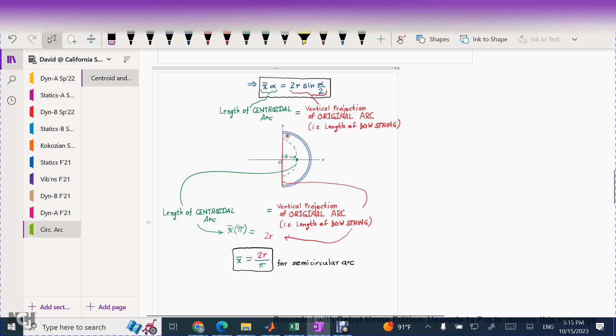And that has to equal to the bow string. Now, what is the length of this bow string? It's a diameter, or put another way, it's 2 times r. So go ahead and solve for your x bar. Your x bar is therefore going to be the 2r, which is the diameter, divided by the pi. So I hope that makes some kind of sense.